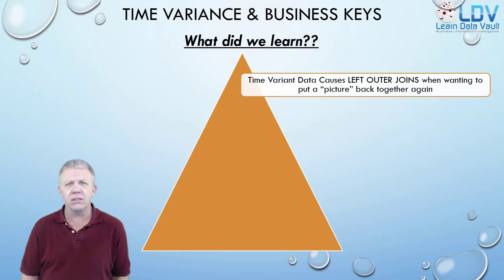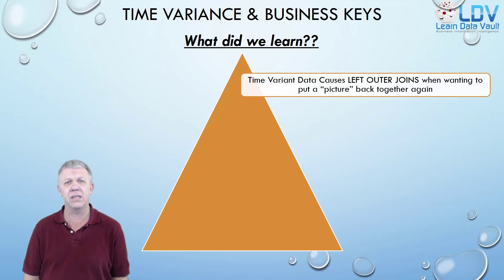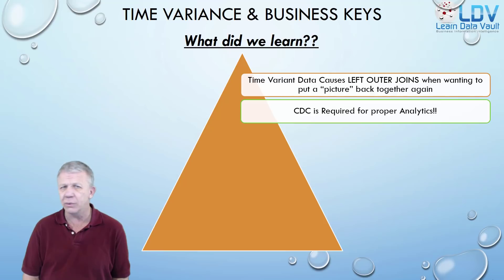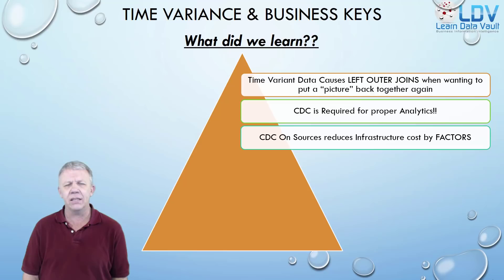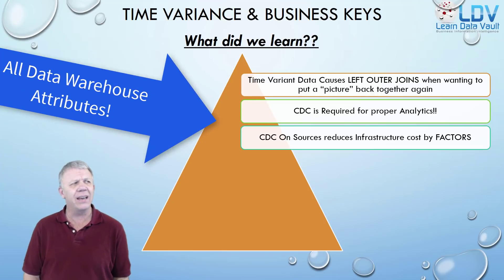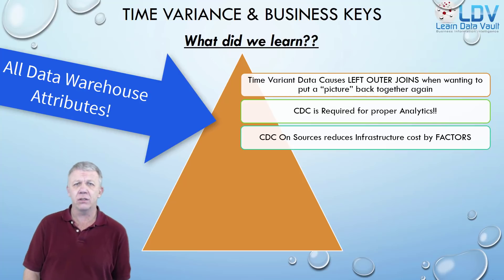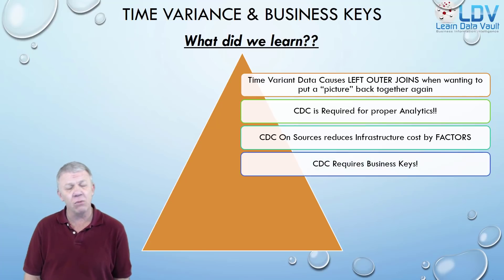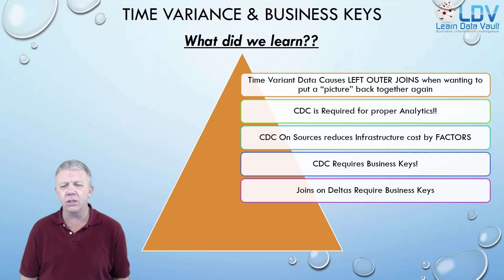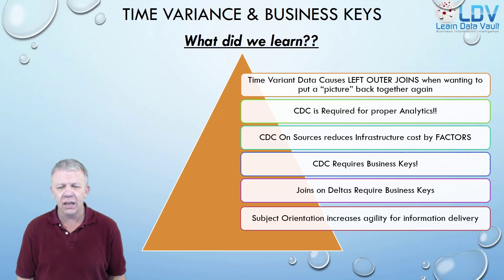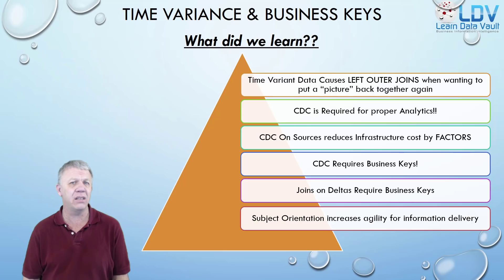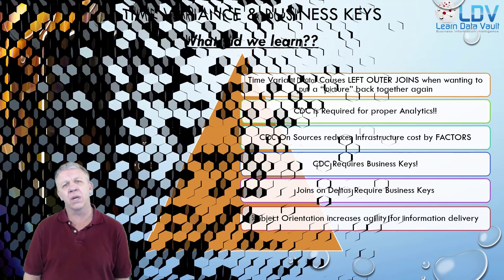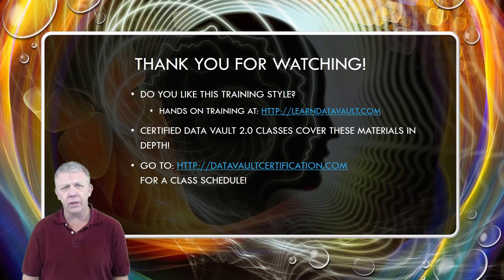What did we really learn from this video? Time-variant data causes left outer joins — there's no way around it. It's not the fault of any model: third normal form, star schemas, Data Vault — they're all the same. CDC is required for proper analytics. CDC on source systems is actually a reduction of cost by multiple factors, except in the case of IoT devices — edge computing changes that game. CDC requires business keys; joins on deltas require business keys. You have to have subject orientation — all of these things are part of the data warehouse. A Data Vault model is an optimal choice for a data warehousing build.